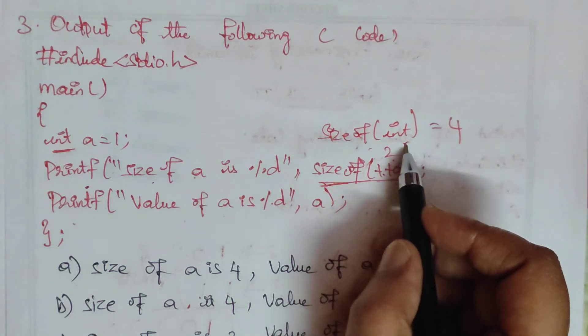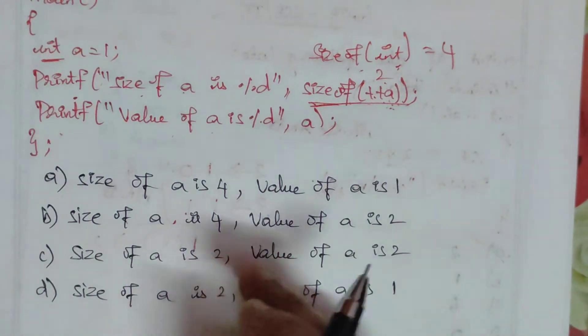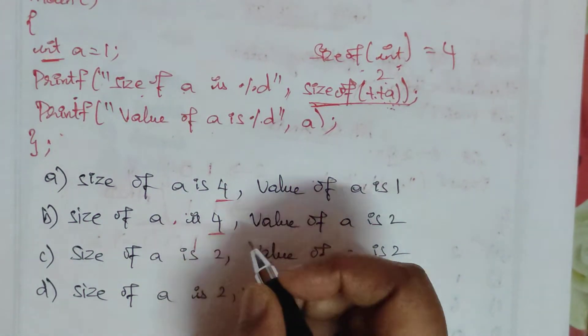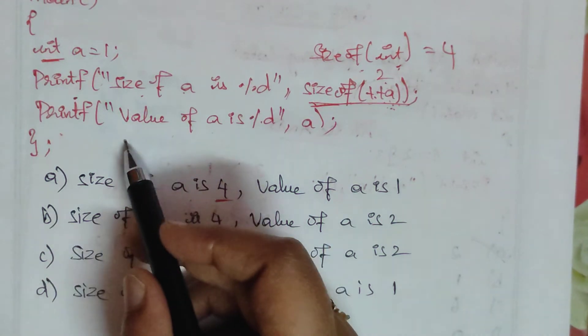In the given options, size of a is 4 in option 2. Either a or b option could be the answer. If we go to the second statement, this is value of a.